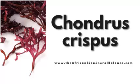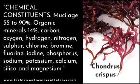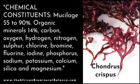Hi everyone. In the last video looking at Chondrus crispus, I said I will also look at the biochemistry of the plant. This is some of the information available as it pertains to Chondrus, specifically taken from the Advanced Treatise in Herbology by Dr. Edward Shook. Chemical constituents: mucilage 55 to 90 percent, organic minerals 14 percent, carbon, oxygen, hydrogen, nitrogen, sulfur, chlorine, bromine, fluorine, iodine, phosphorus, sodium, potassium, calcium, silica, and magnesium are some of the elements found in Chondrus.